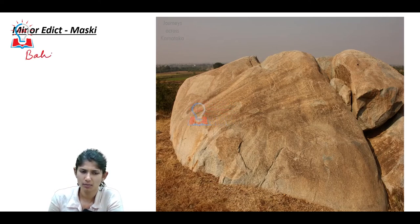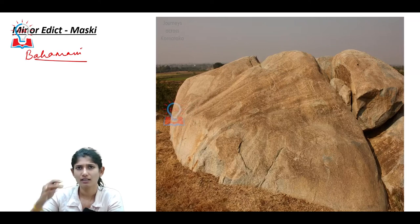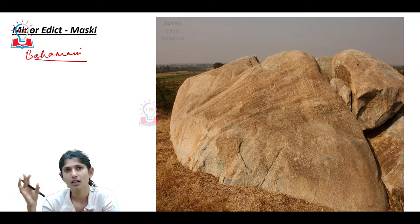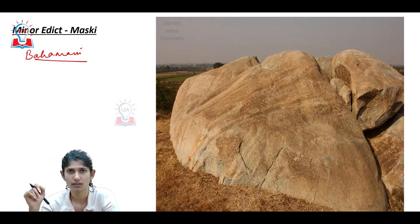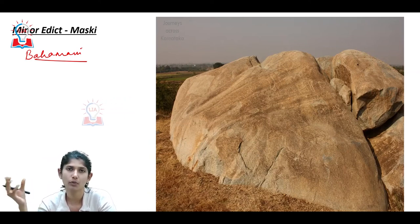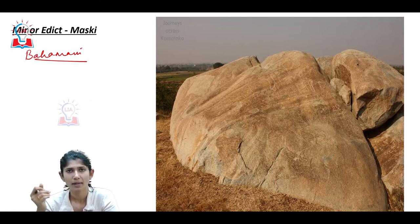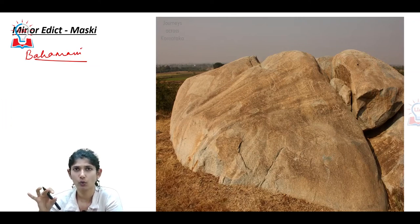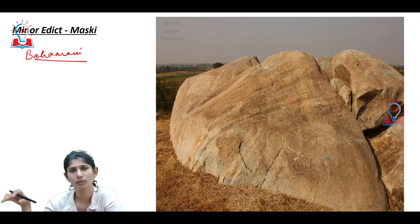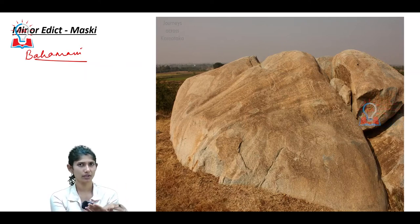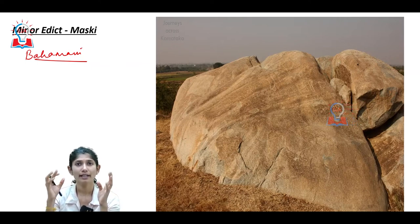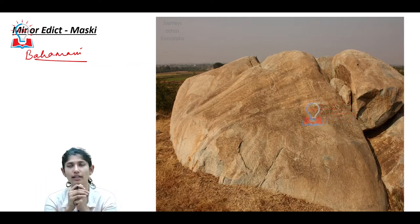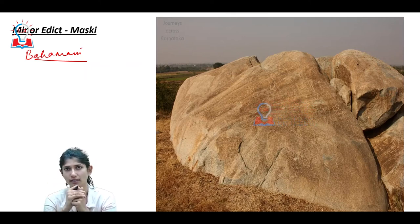To recap: we talked about how the Bahamani kingdom was divided, the Sultan as central authority, the division of provinces, the flourishing trade zones, and then how the trade zone of Dabhol was linked to the Battle of Diu - which marked the transition from medieval history to modern history.